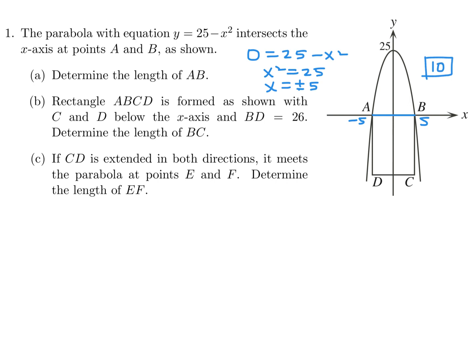Rectangle ABCD is formed, as shown, with C and D below the x-axis, and BD equal to 26. Determine the length of BC. B to D is 26, so let me draw a little line there — that guy is 26.